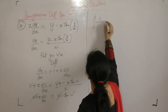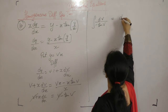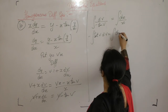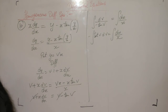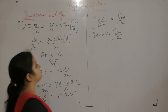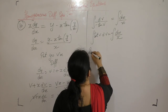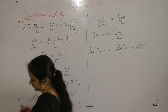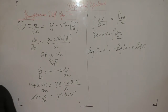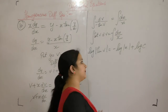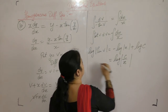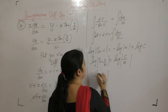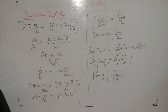This gives integral of 1 upon tan v dv equals integral of dx upon x, or integral of cot v dv equals dx upon x. The integral of cot v is log of sin v. So log of sin v equals log of x plus log c, giving log of sin(y/x) equals log(cx). Cancelling log: sin(y/x) equals c upon x.